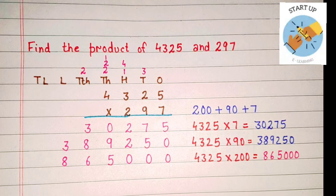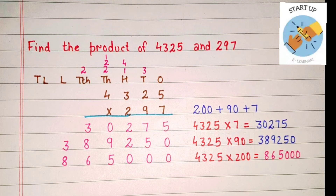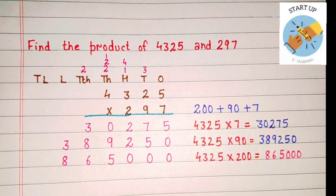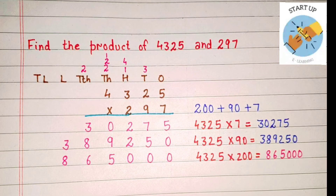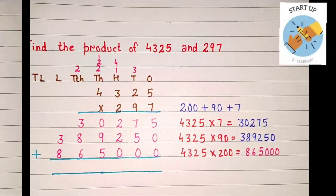Two will be multiplied by the digit at tens place: two twos are 4, plus 1 carried over, equals 5. Two multiplied by 3 at hundreds place: two threes are 6, written under ten-thousands place. Two multiplied by 4 at thousands place: two fours are 8, written under lakhs place. By multiplying 4325 by 200, we got the third partial product: 8,65,000.